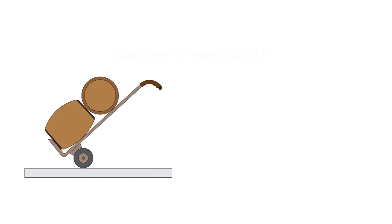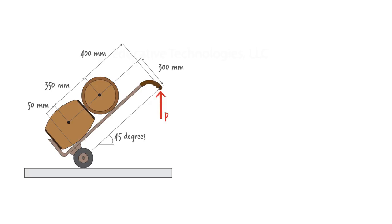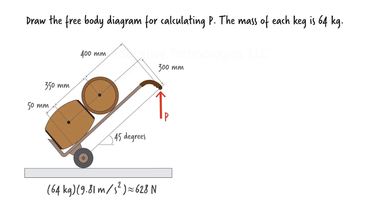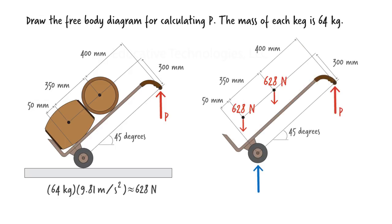In this problem, we have two kegs resting on a hand truck. Each keg has a mass of 64 kg. We want to determine the vertical force that one needs to apply to the handle of the truck in order to keep the assembly in static equilibrium. First, let's calculate the weight that each keg exerts on the truck. Assuming the weight acts at the center of gravity of the keg, we can replace each object with a vertical force. Besides the unknown force P, there is one other force in play — the reaction force at the base of the wheel, which we label R.